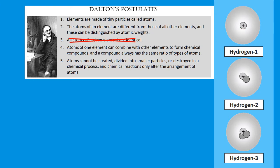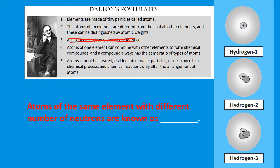Not all atoms of a given element are identical, as we see here with these hydrogen atoms. Hydrogen-1 has only one proton. Hydrogen-2 has a proton and a neutron, giving us the mass number two. Hydrogen-3 has two neutrons and one proton, giving a total of three — so its mass number is three. These numbers signify the mass number of the isotopes.